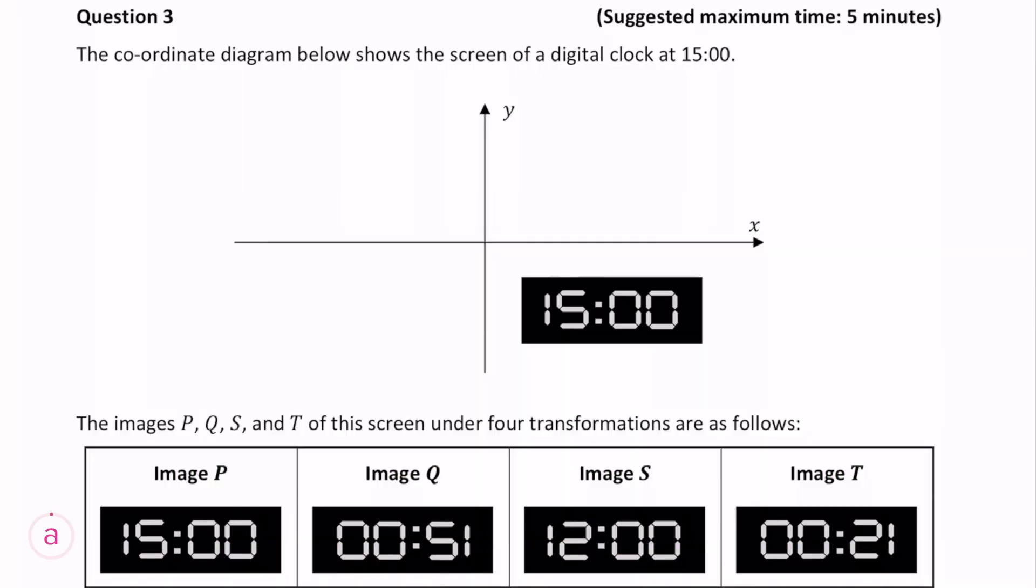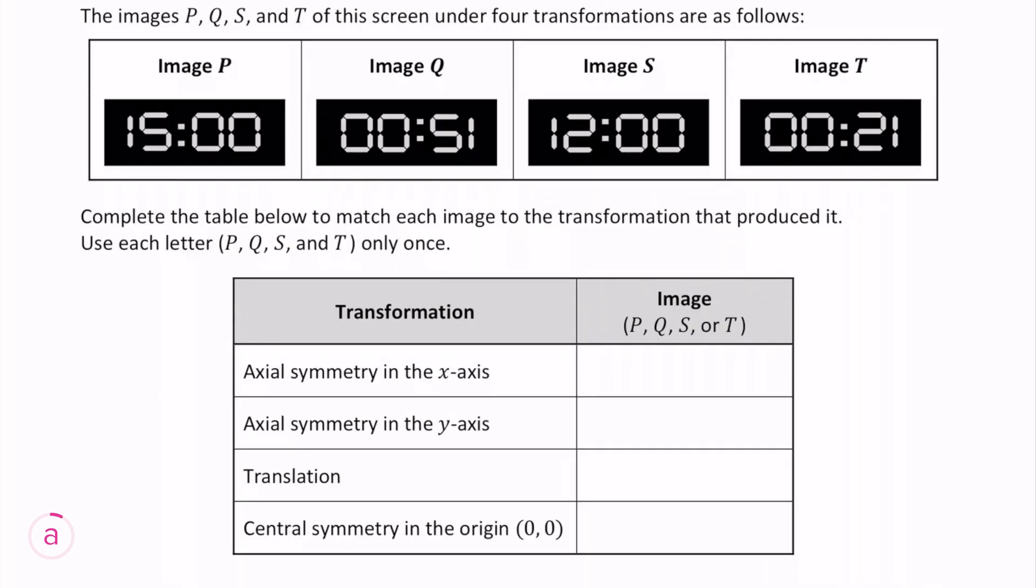Here's today's question which is worth 10 marks. We're given a diagram of a clock and its image under four different transformations. We're given a table with a list of transformations and we have to match the image to the transformation.